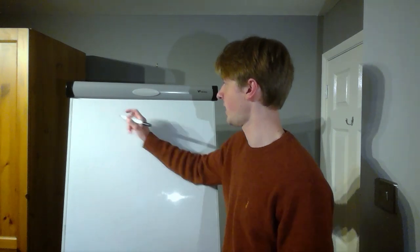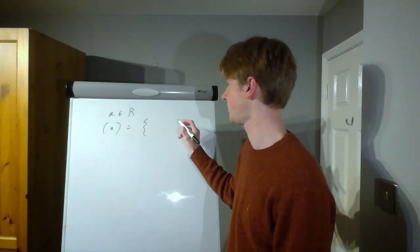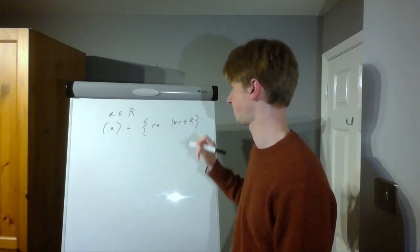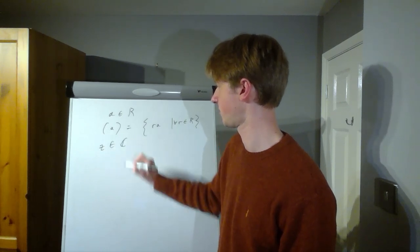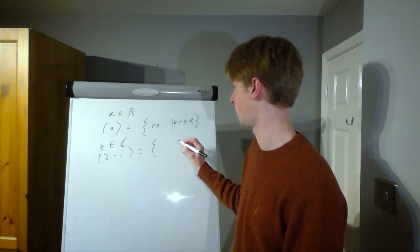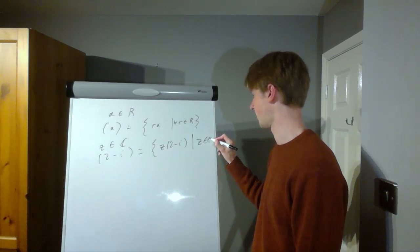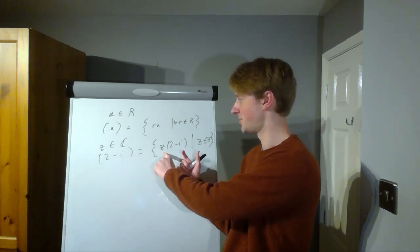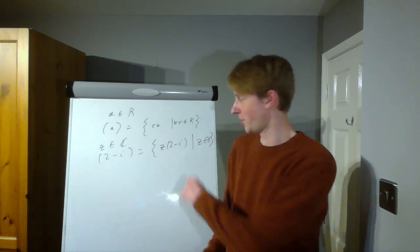The ideal generated by a particular element A in the ring is the set of everything in the ring times A, for all R in the ring. For example, in the complex numbers, the ideal generated by some element is the set of all complex numbers times that element. You can't get out of this by adding and multiplying, because multiplying two complex numbers together just gives another complex number already inside that set.